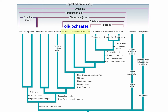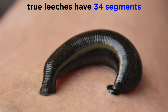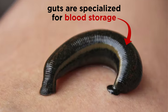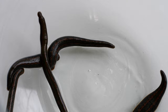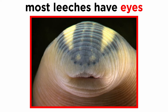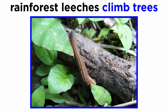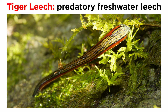Moving on from the oligochaetes, let's finish up by touching on the leeches. All members of Hirudinida have a set number of segments. The true leeches have exactly 34 segments, a posterior sucker for attachment, and an anterior sucker that houses the mouth and three piercing jaws that leave a distinct scar after feeding. Their guts are specialized for storage of large quantities of blood. Most leeches crawl like inchworms, looping the body by attaching one sucker and then the other. Most have eyes, and the terrestrial land leeches, common to rainforests of the Indo-Pacific, have five pairs of eyes and the ability to seek out prey on land. They are known to climb trees in search of warm-blooded vertebrates to parasitize, such as birds or mammals. Though leeches are most infamous as parasites, there are many active predatory freshwater leeches, such as the tiger leech, that force their pharynx into an opening of a small animal and entirely drain it of its fluids.